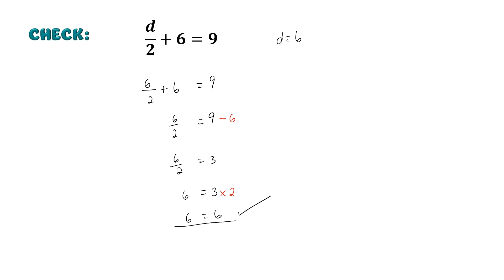And since both sides of our equation are equal to 6, that means that your answer, which is D equals 6, is the correct solution for this equation.